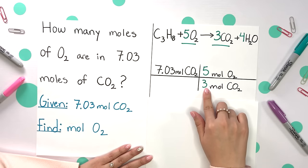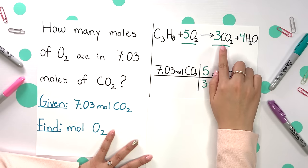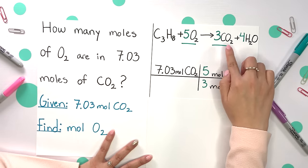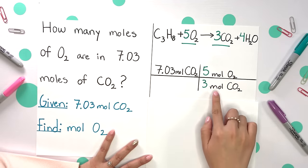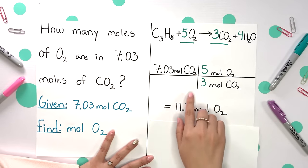We'll get our mole ratio from our balanced equation. There are 5 moles of O2 per every 3 moles of CO2. Multiply straight across and divide by 3, and you get 11.7 moles of O2.